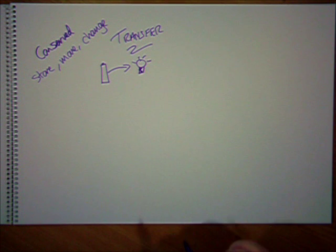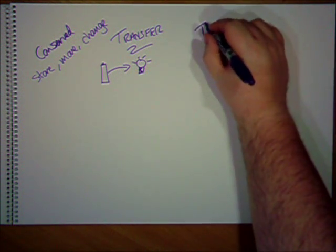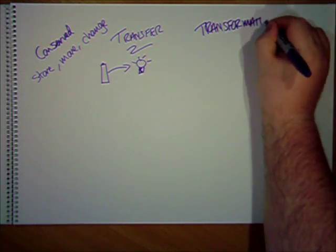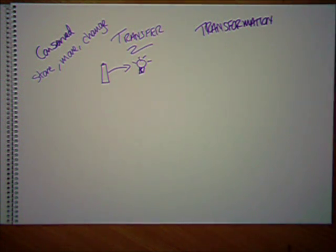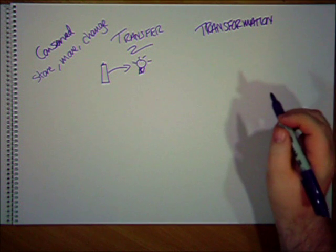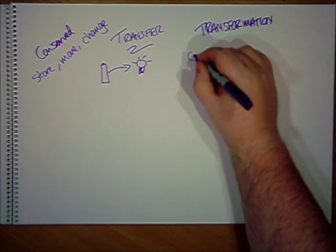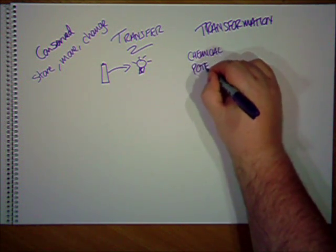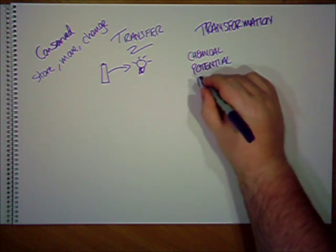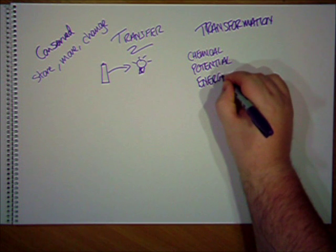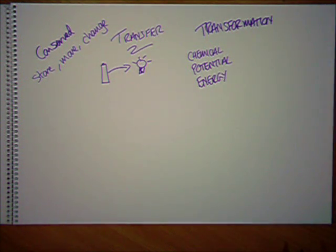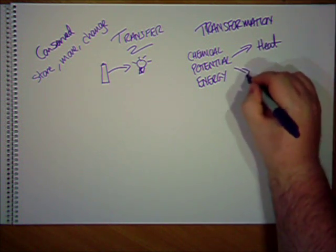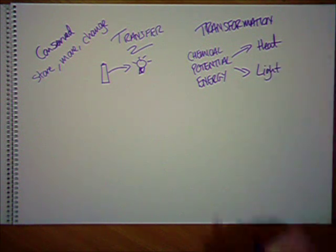In this process, there's an energy transformation as well. Energy transformation simply means to change that energy from one kind to another. So, here in our cell, we have chemical potential energy. That chemical potential energy is then transformed into heat and into light.